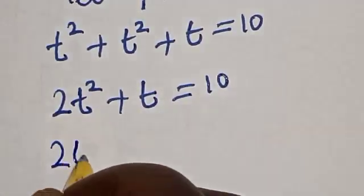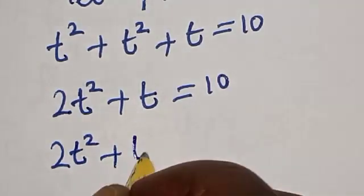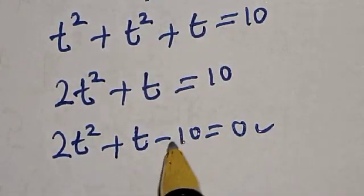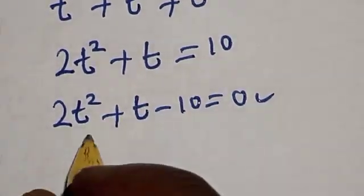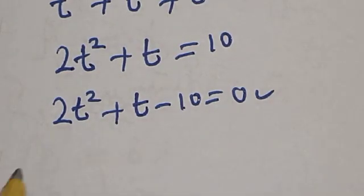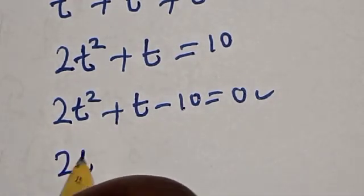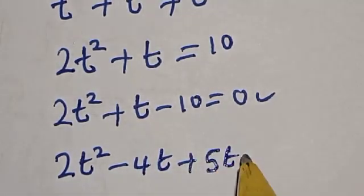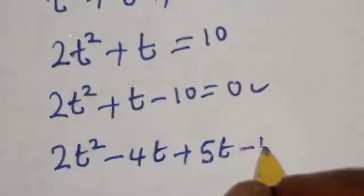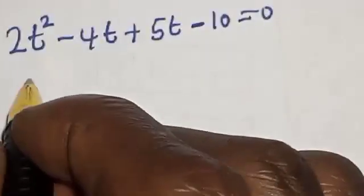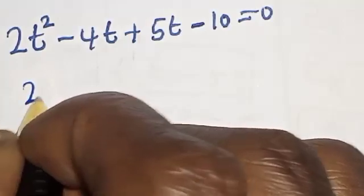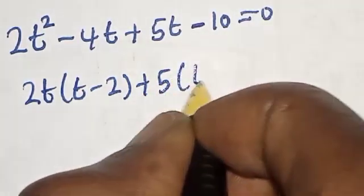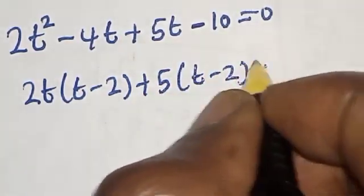This gives us 2t squared plus t minus 10 is equal to 0. Factoring: 2t times (t minus 2) plus 5 times (t minus 2) is equal to 0.